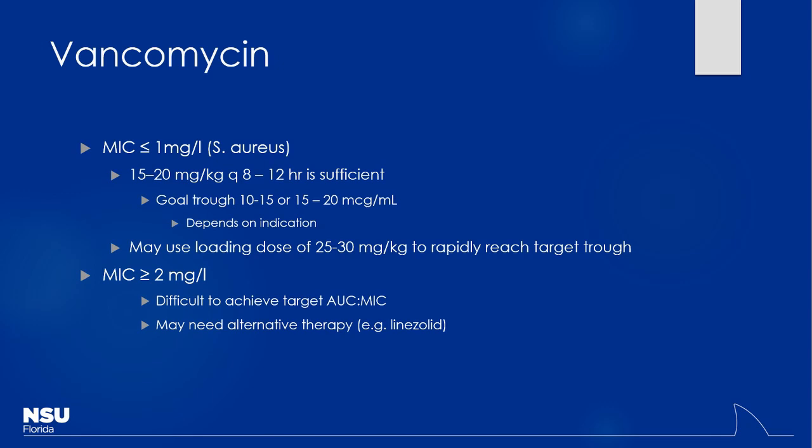For example, if Staph aureus has an MIC less than one milligram per liter, you don't have to shoot for as high levels as if it came back greater than two milligrams per liter. On cultures and sensitivities, it'll state the MIC. At a certain point, if the MIC gets so high, it becomes very difficult to give vancomycin at high enough doses to even cover that bacteria.